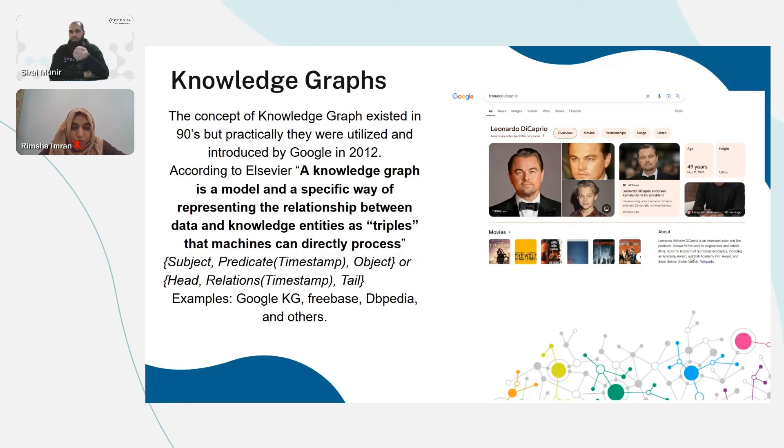For example, when you search on Google about a famous person like Leonardo DiCaprio, you see a panel. This panel in terms of Google knowledge graph is termed as a knowledge panel. This knowledge panel is extracting information from Google's knowledge base where different websites and information sources are connected, and then we're aggregating that information and representing it to our user.